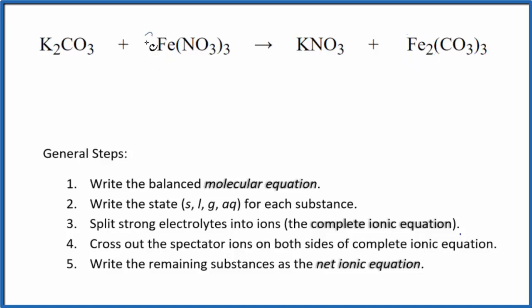I'm gonna put a two in front of the iron, and then I have three carbonates, only one over here, so I'm gonna put a three in front of the potassium carbonate. Now I have six of these potassium atoms, I'm gonna put a six here. That also gives me six nitrates. I have three nitrates here times that two, that's six. This is the balanced molecular equation.